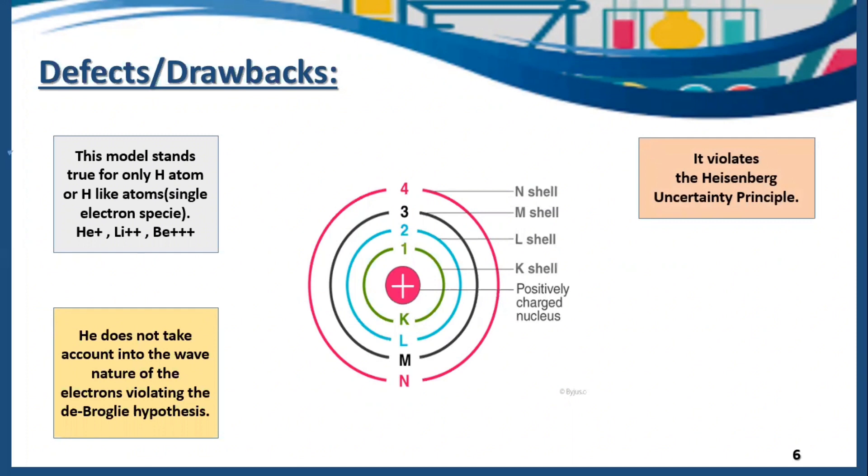Bohr's model also violates the Heisenberg uncertainty principle. Because according to Heisenberg uncertainty principle, no microscopic species can show momentum and position at the same time. Electron is also a microscopic species. But according to Bohr, he explained the momentum and position of the electron at the same time, which is even not possible.